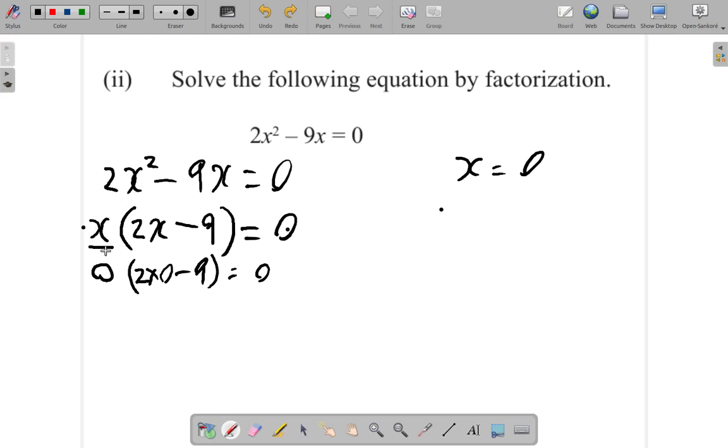x itself can be 0. This is x times something else. Two numbers multiplied and the answer is 0 means one of them is 0 or maybe the other one is 0 or both are 0. So it could be that x itself is 0. It could also be that the other factor that is multiplied is 0. It could be that 2x minus 9 is 0. So you could make a statement that either x is 0 or 2x minus 9 is 0. You see that?